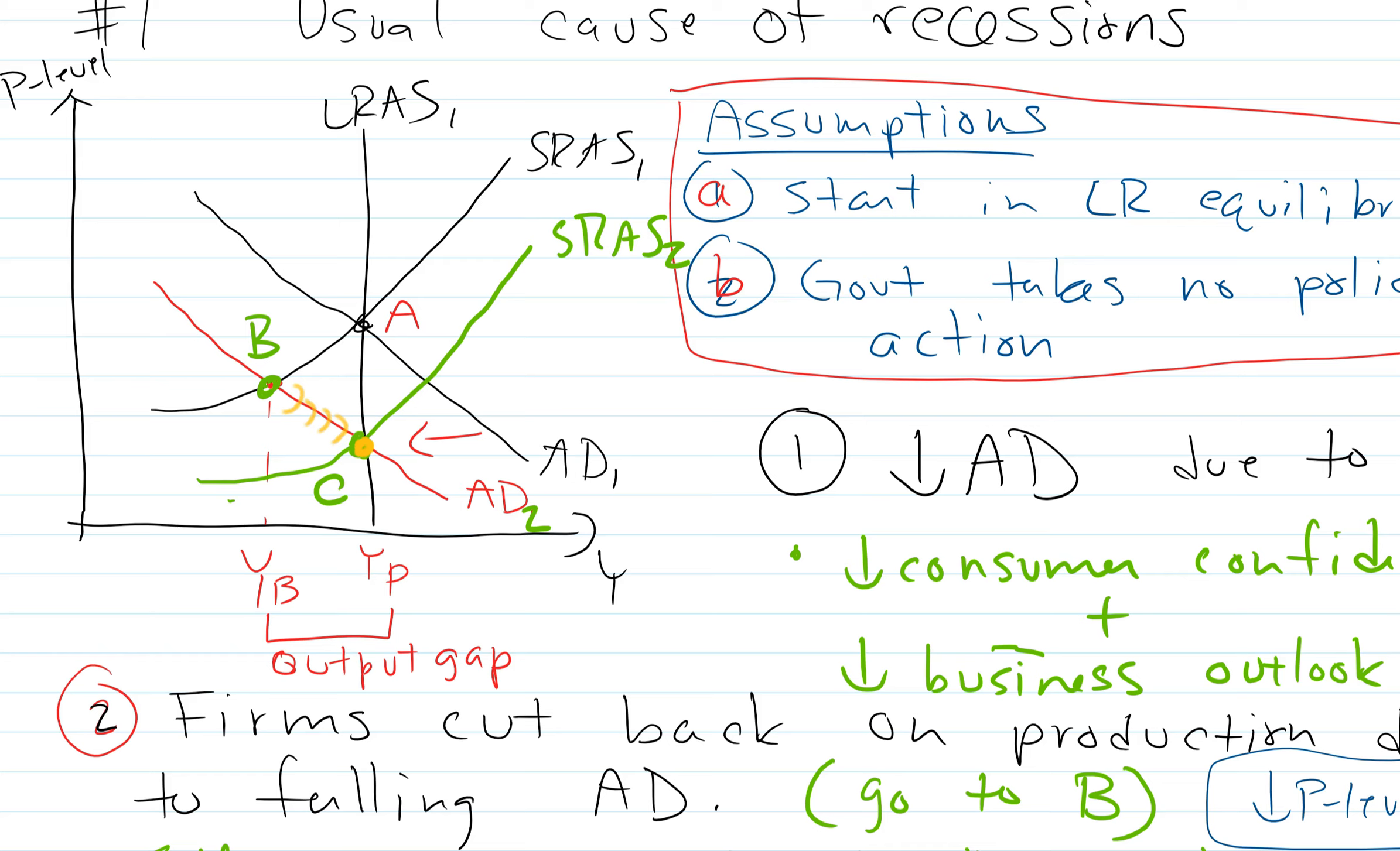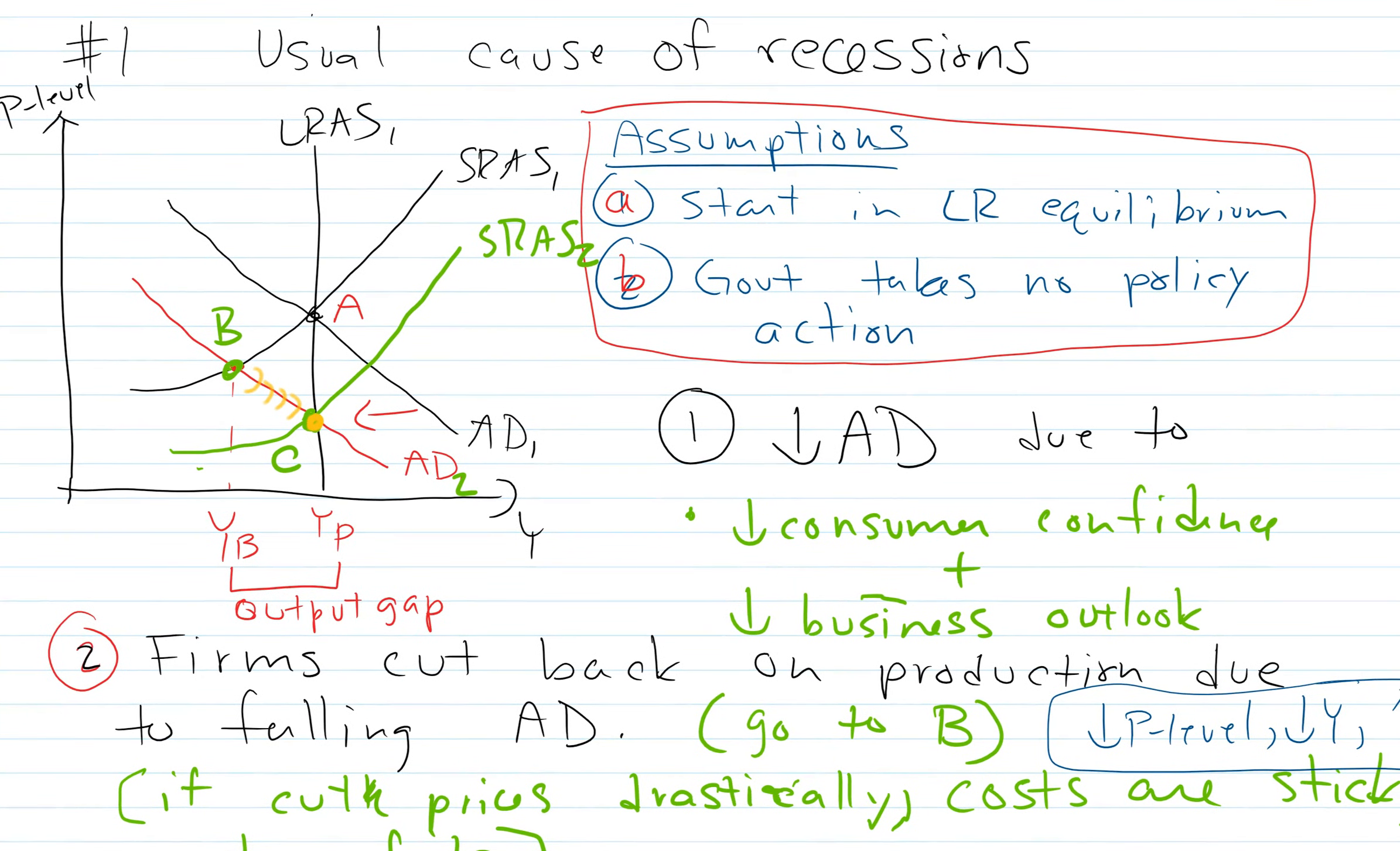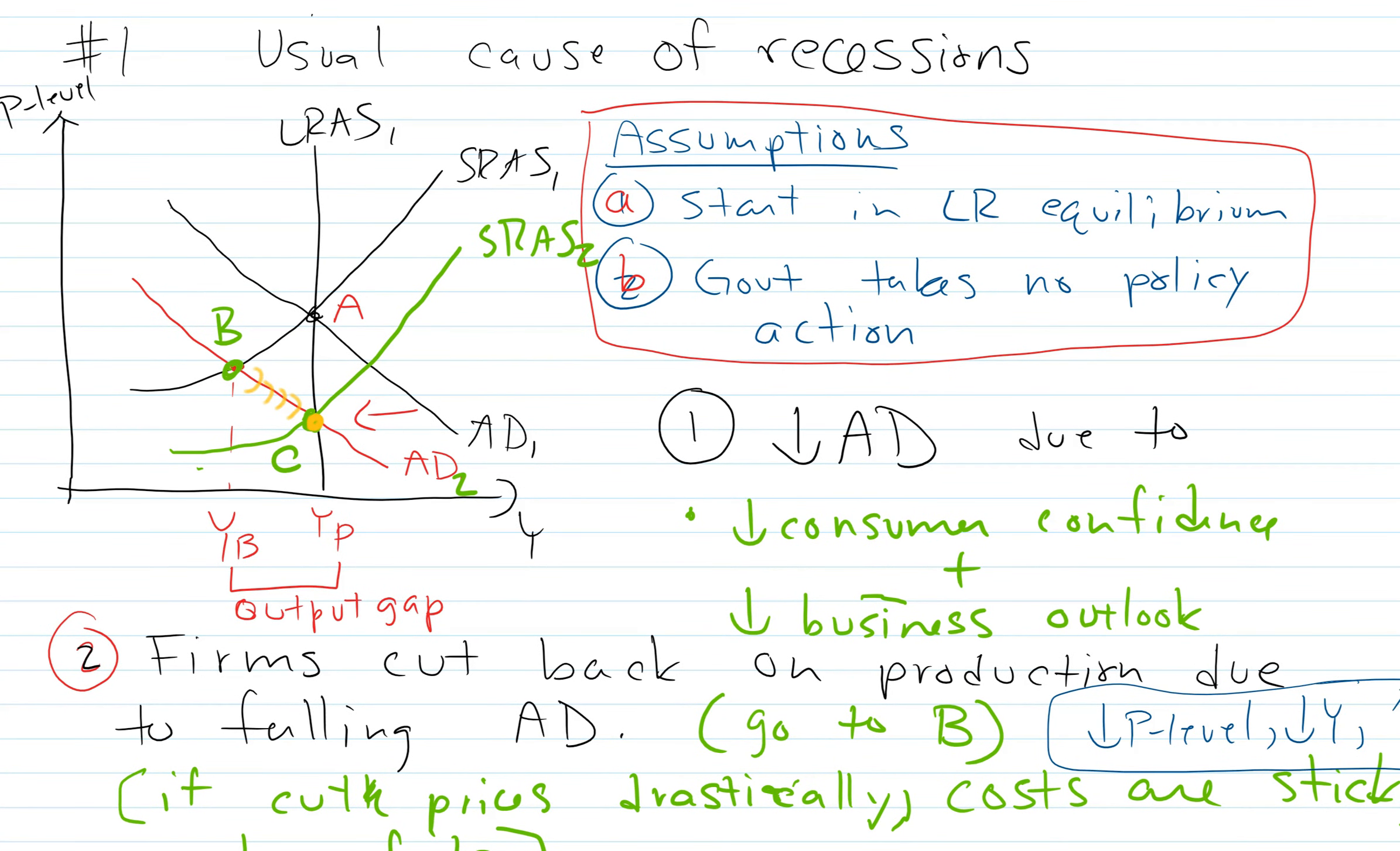So eventually there starts to be pressure on these wages and these rents to fall. And as they fall, we start to move this way and we eventually get back to equilibrium at a lower price. And the big question is, how long does it take to get from B to C? If this is fairly fast, maybe we should just leave this situation alone. If this takes a long time, then probably the government should go ahead and do something. So we'll come back to those topics in a future week.